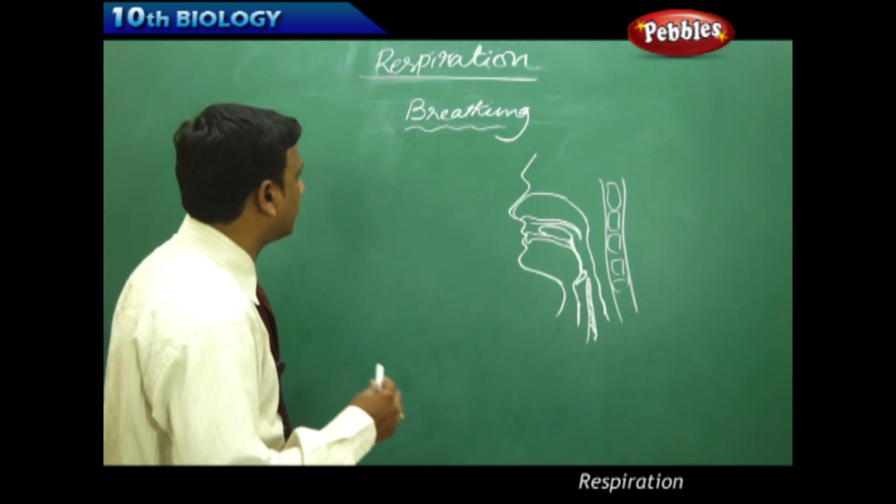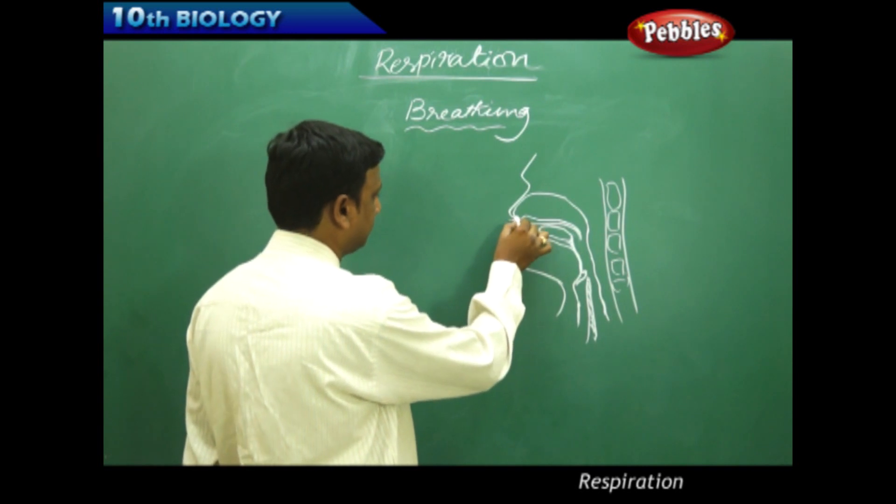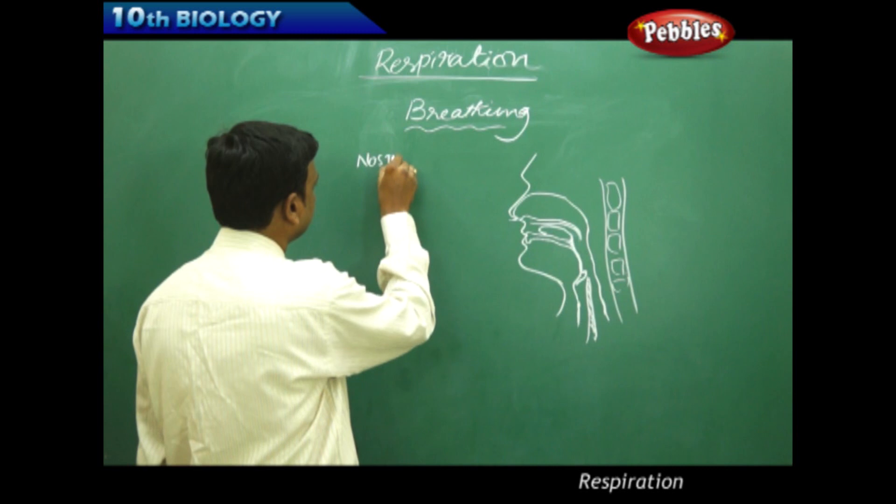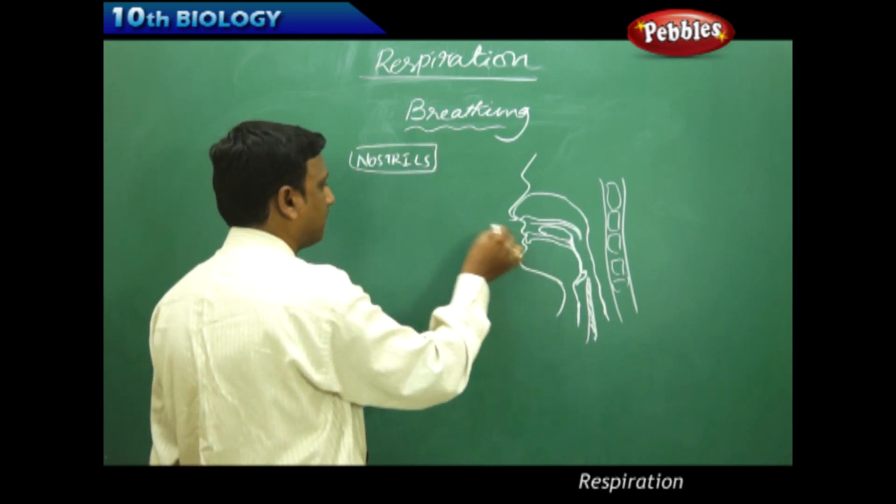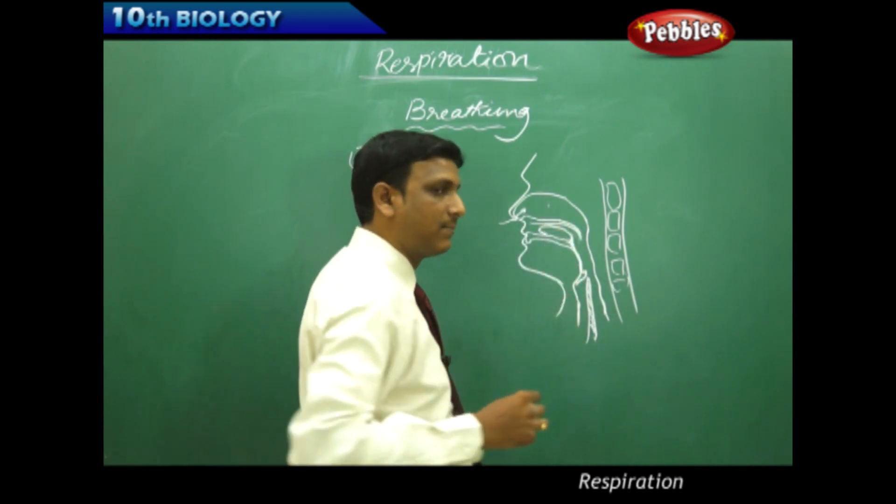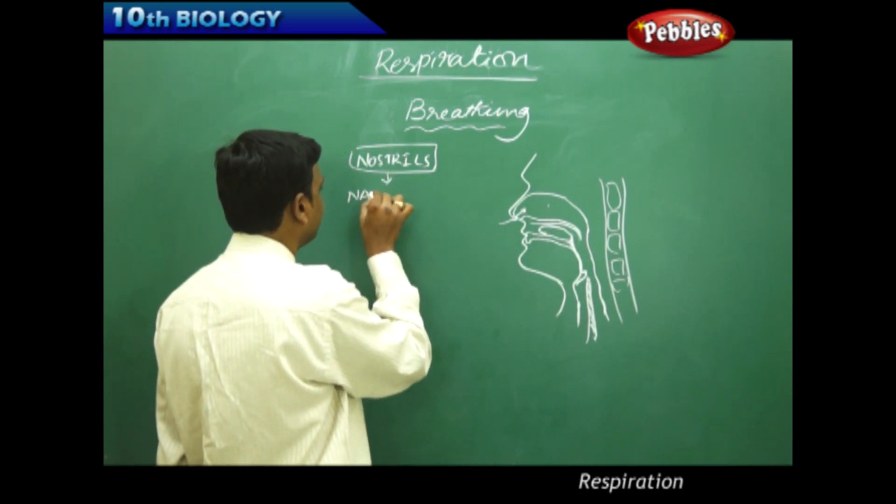Now let us see in detail. Let us look at the passage of air. The journey of air begins with the entry of air through the nostrils. Nostrils are the beginning part into which the air enters into a chamber called the nasal cavity.